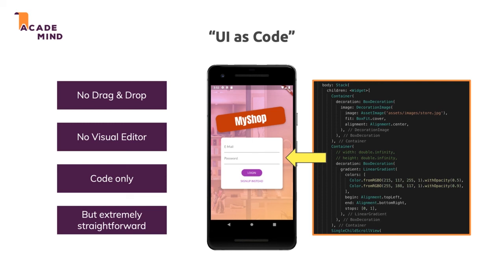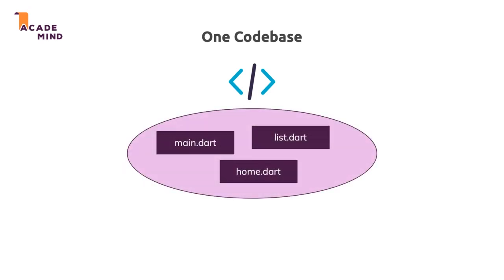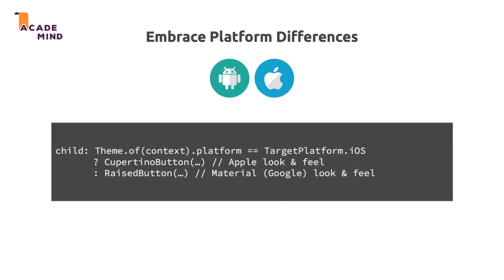We'll build our apps from scratch, and I'll introduce you to the core widgets and how they work together step by step in this course. The one codebase concept is also important — you'll have a bunch of Dart files in your project, and these make up your application. You build both an Android and an iOS app from that one project. But if you need to, you can still find out which platform you're running on and render different content accordingly. So these are the core Flutter ideas, and we'll go through all of them step by step as we progress through the course.